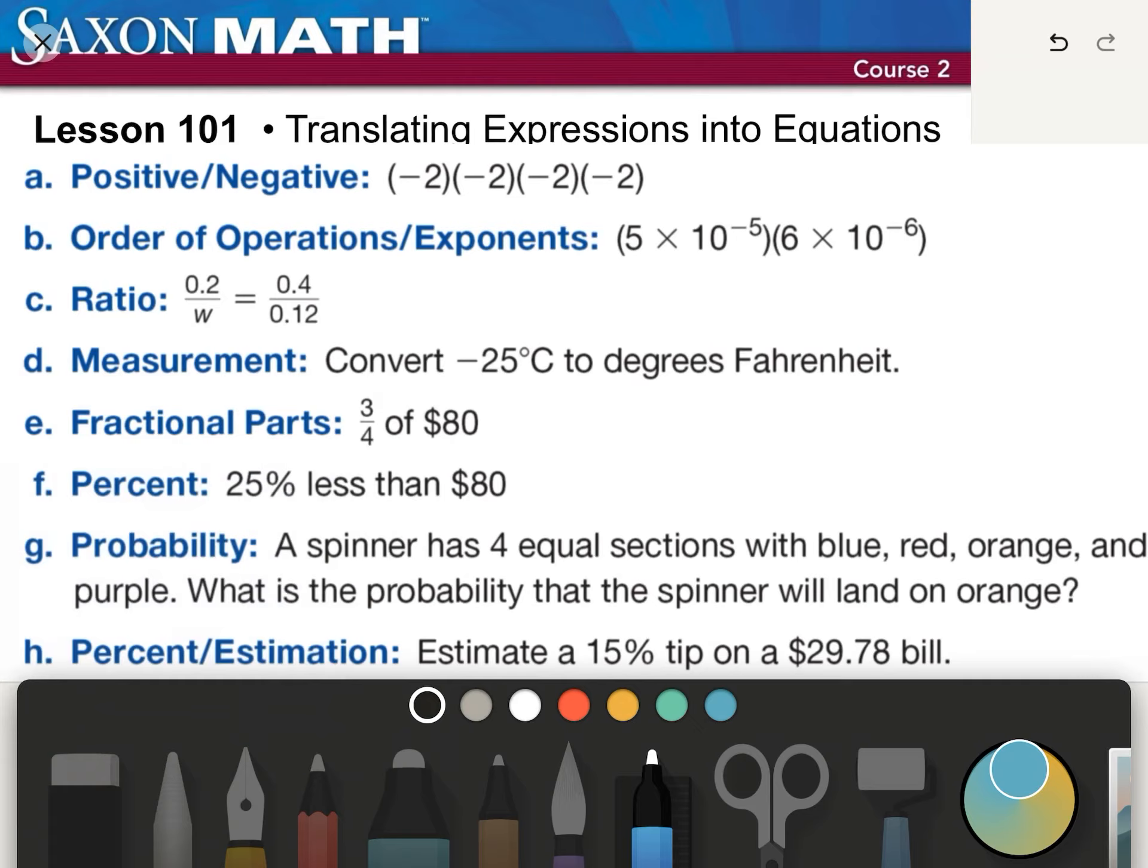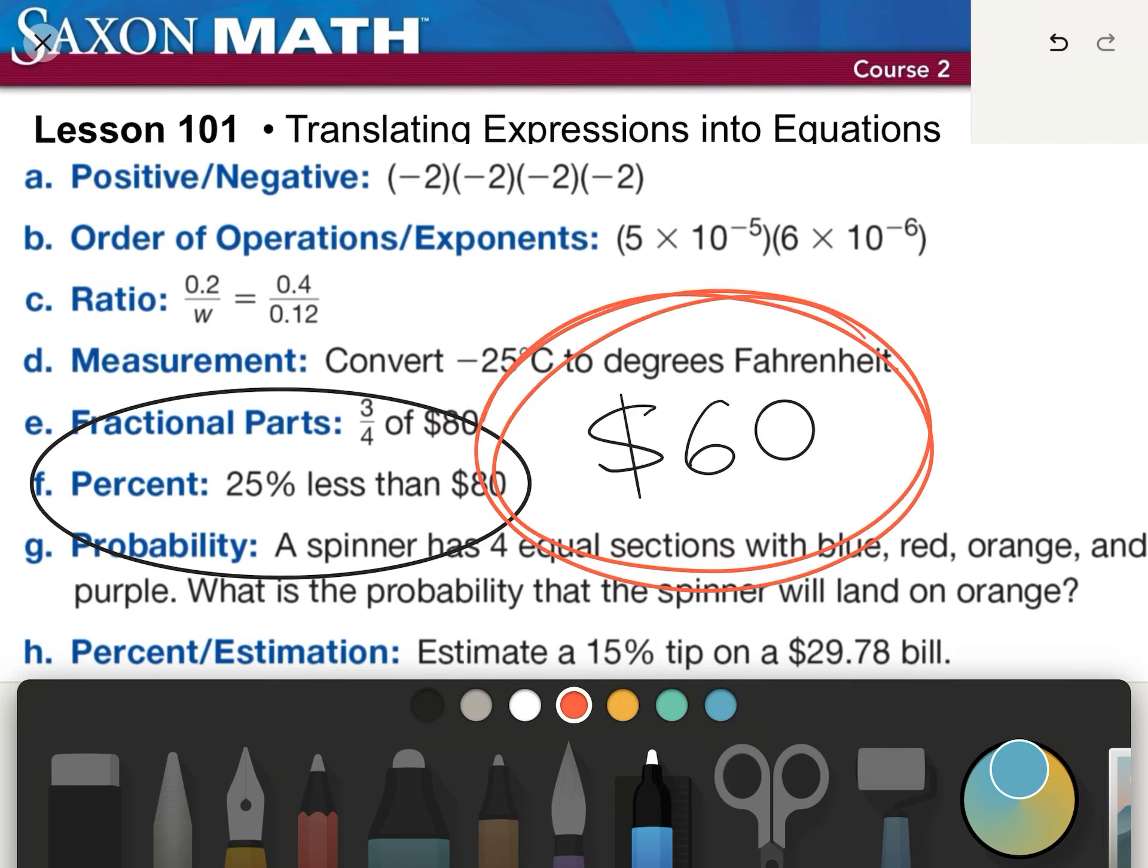These next two are pretty simple. Three-fourths of $80. Well, one-fourth of $80 is $20. So three-fourths of $80 is $60. And looking at percent, 25% less than 80, that is also $60, because we're still subtracting one-fourth of that.